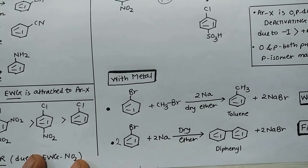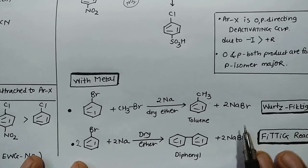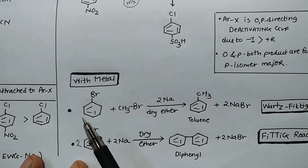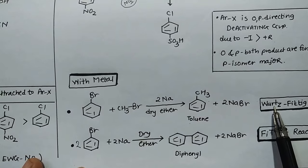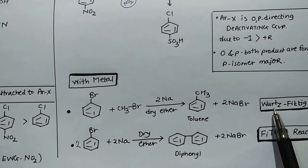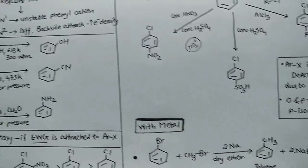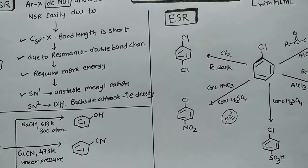This reaction will be called Fittig reaction. So remember all three reactions well and understand the difference. Only alkyl halide is Wurtz reaction, only aryl halide is Fittig reaction, but if you take both alkyl halide and aryl halide, then it is called Wurtz-Fittig reaction. So these are your halo arenes reactions.